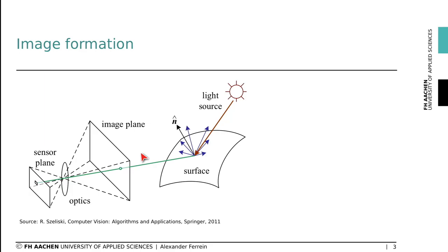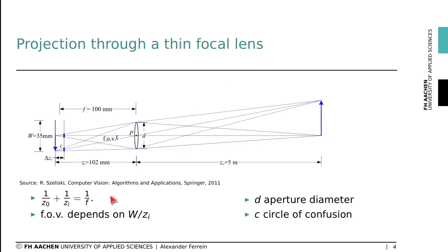How do we get an image from our real-world scene? A light source reflects light rays from surfaces, which fall through optics onto a sensor plane. The optics can be as simple as a tiny hole in a box, as in a pinhole camera, or a camera with optical focal lenses. The image plane is the viewport of the camera to the world. Light rays reflected from an object fall through the lens P onto the sensor plane W. The distance between P and the plane where the projection is sharp is called the focal length. If the distance between the sensor plane and the lens is not exactly f, the projection will be blurred.